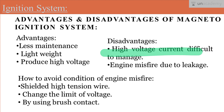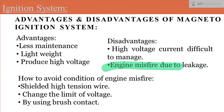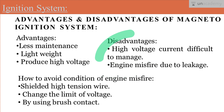The second disadvantage is that because of this high voltage current, there is a possibility of engine misfire due to leakage. So engine misfire due to leakage is the second disadvantage of this magneto ignition system. There are some solutions to avoid these drawbacks.